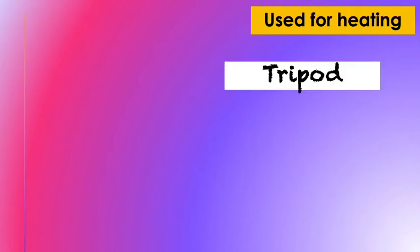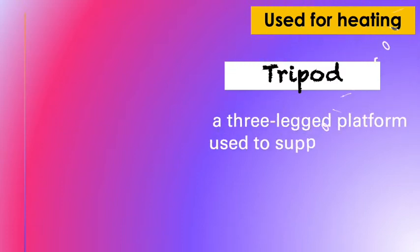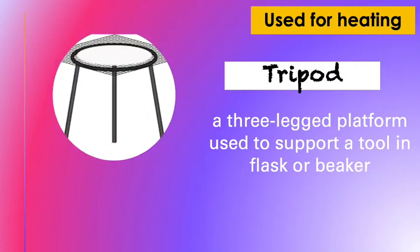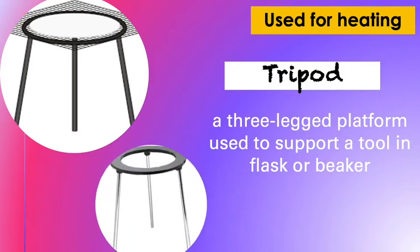Next one is a tripod. It is a three-legged platform used to support a tool, a flask, or a beaker. This is where a wire gauze will be placed.